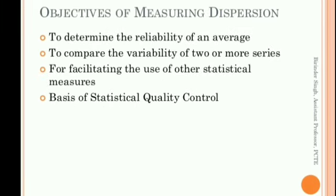Now, the main objective kya hai Measures of Dispersion ka? First objective yahi hai ke whether jo maine average determine kiya hai, uski real ability kitni hai — how much woh real hai — woh mujhe determine karna hai, that is my first objective. And second objective: to compare the variability of two or more series. Jabhi bhi mujhe do ya do se zyada series ki variability find karni hai, I need to compare the two or more series — at that time also I can use Measures of Dispersion. That is my second objective of Measures of Dispersion.